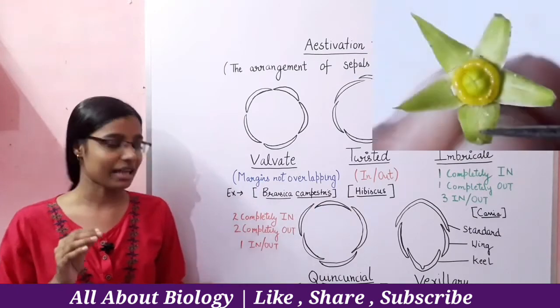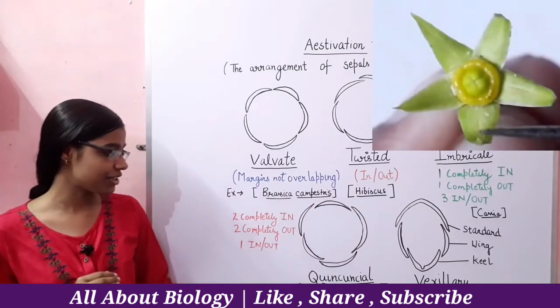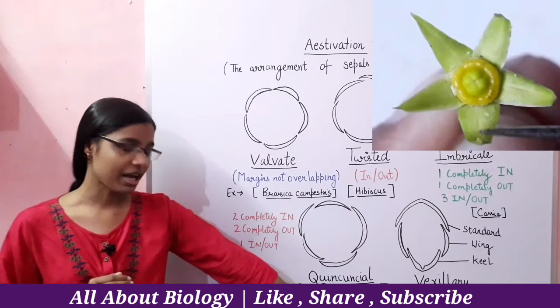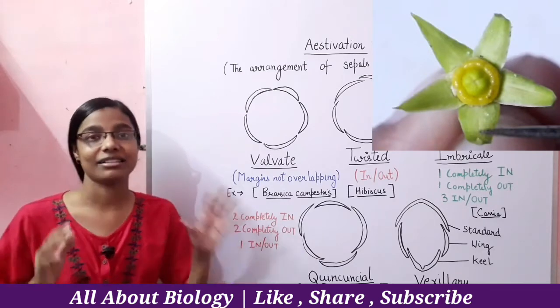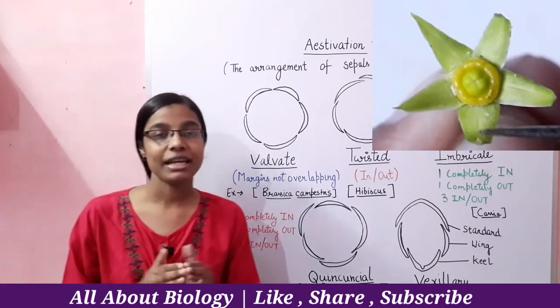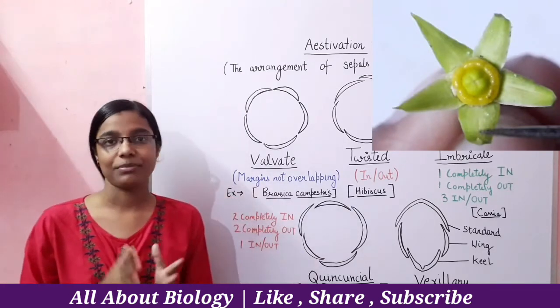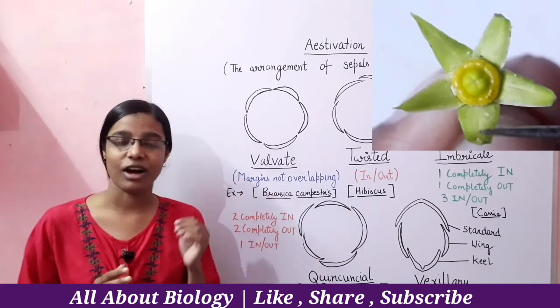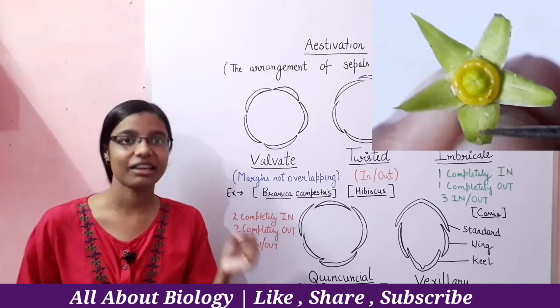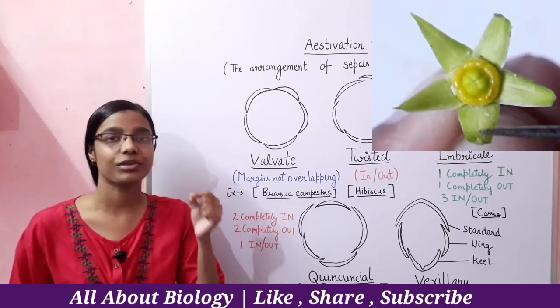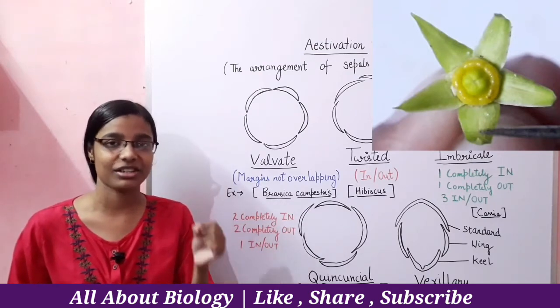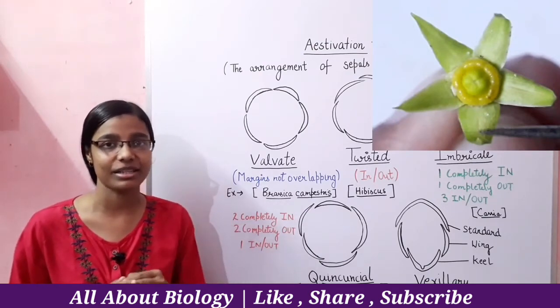The example of Quincuncial Estivation is Thevetia peruviana calyx. We have also seen Quincuncial Estivation in a previous video — go check it out if you haven't seen it.